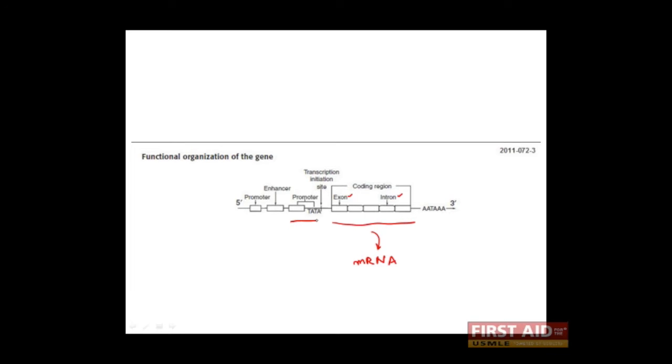A gene can also have a promoter site. There's one here and there's another one actually here. Promoter regions are bound by transcription factors, which can then recruit RNA polymerases to begin transcription of the gene.